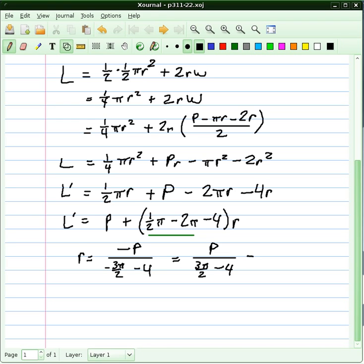Just to clean up that fraction in the denominator, I'm going to multiply everything by 2. That gives me 2P over 3π plus 8. So our critical point is 2P over 3π plus 8.